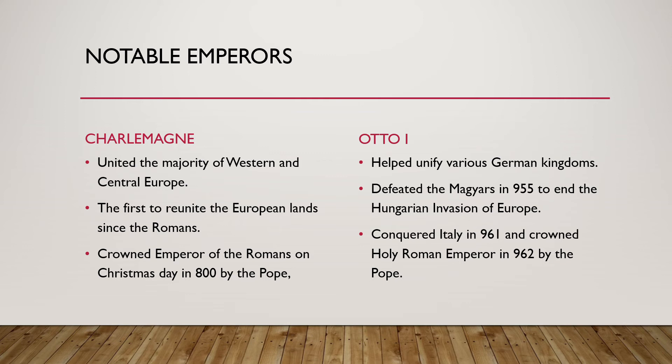Otto the First helped unify various German kingdoms, and in 955 he was able to defeat the Magyars and repelled the Hungarian invasion of Europe. And so in 961, when he conquered Italy, he was crowned Holy Roman Emperor by the Pope, since he had unified all these lands and controlled Rome — so he kind of made the Pope do it.